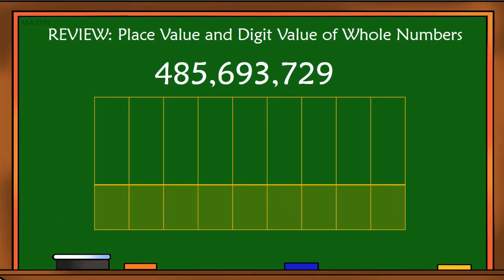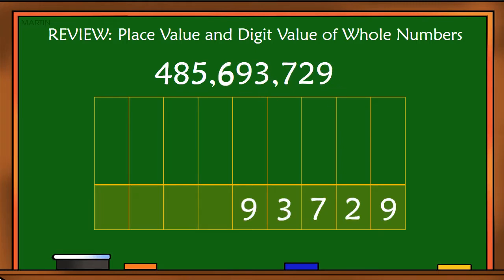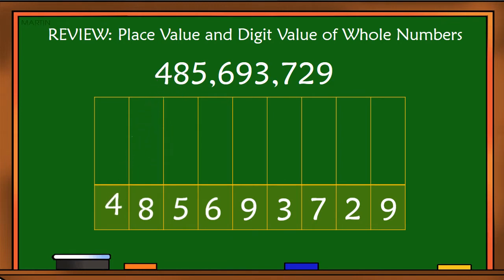First, let us review about the place value and digit value of whole numbers. I have the number 485,693,729. Let's look at their place values.